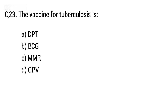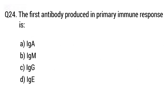The right answer is Option B, BCG. Question 24: The first antibody produced in primary immune response is...